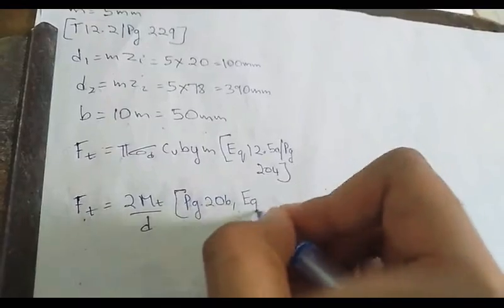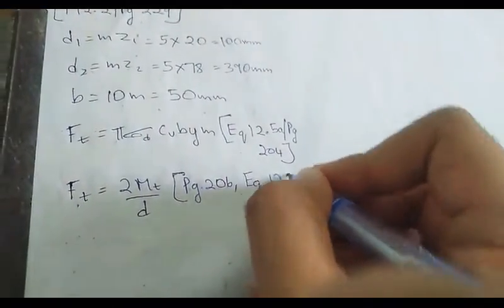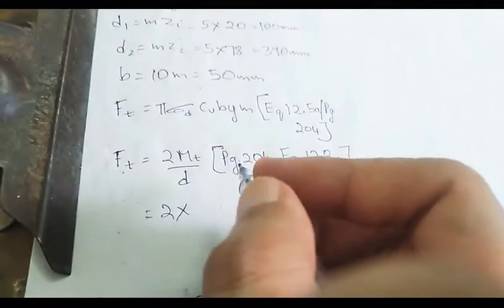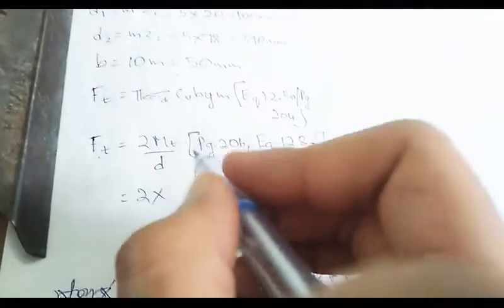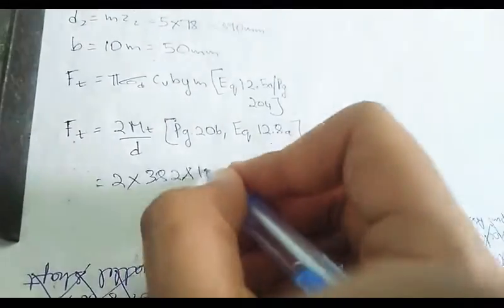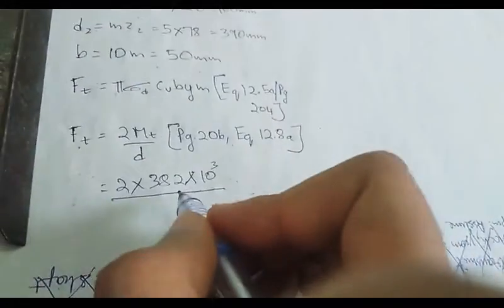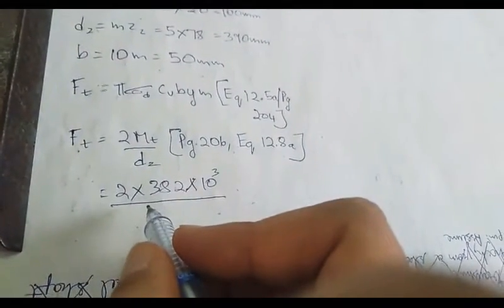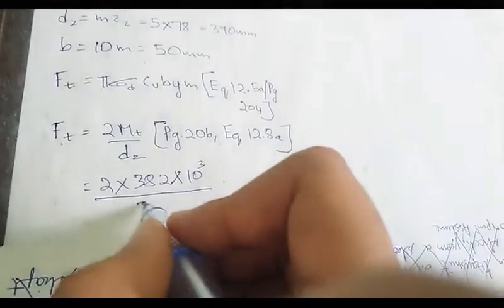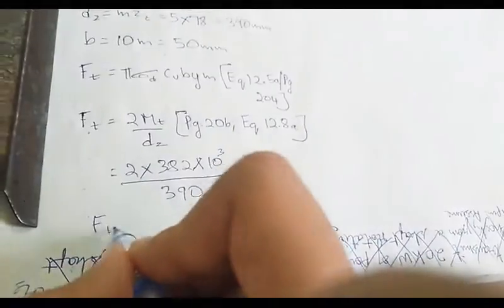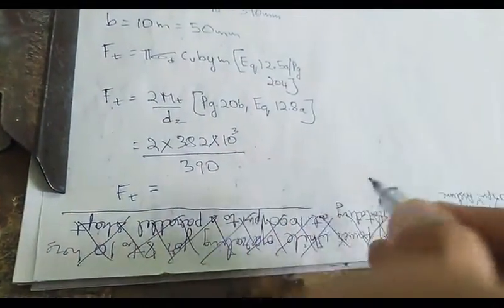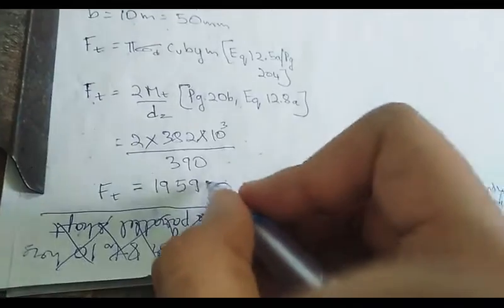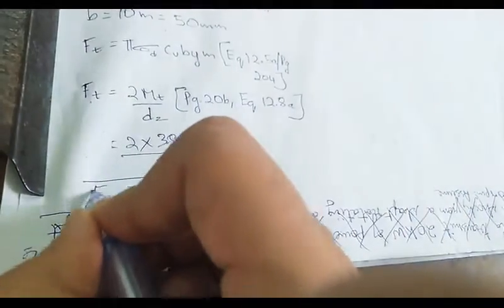From page 206, equation 12.8a, the value of Mt = 382 × 10³ N·mm. Since design is based on gear 2, d = d2 = 390 mm. So ft = 2 × 382 × 10³ / 390, giving ft = 1959 N.